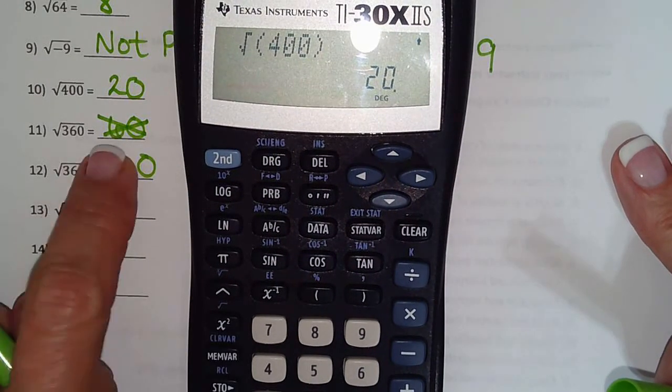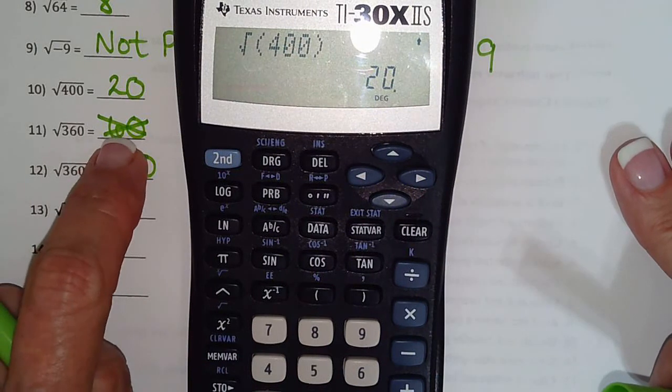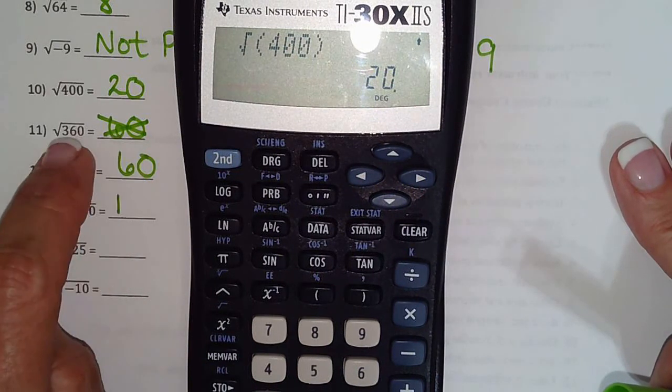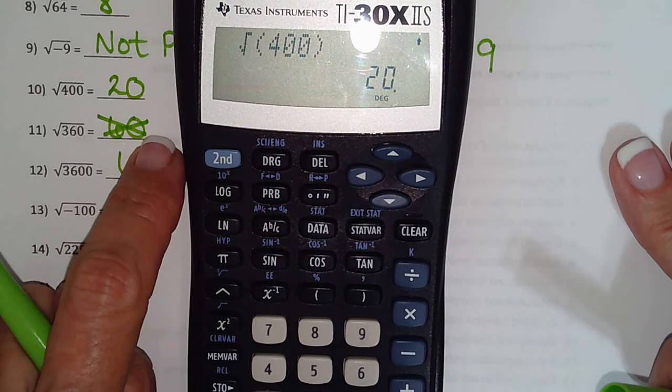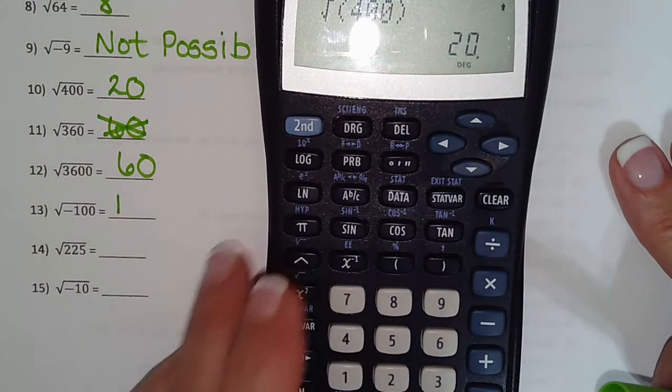And I went too fast and I went 60 but that can't be 60 because 6 times 6 is 36 and there would be 2 zeros. So this one we're going to have to type in the calculator.